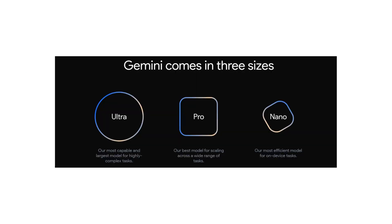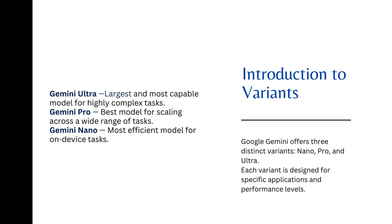We have three variants of Gemini. The first one is Ultra, the second one is Pro, and the third one is Nano. Nano is the most efficient model for on-device tasks. Pro is the best model for scaling across a wide range of tasks. The most capable and largest model is Ultra.